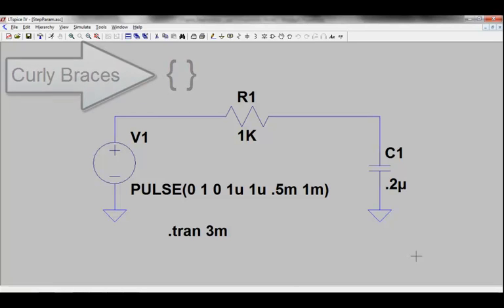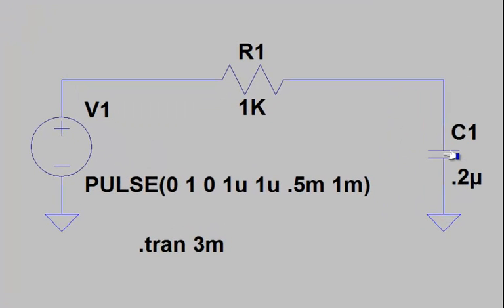Let's look at varying the capacitance in a simple RC filter so that we can compare results. To edit the capacitor's attributes, we need to do a control right-click over the capacitor element.